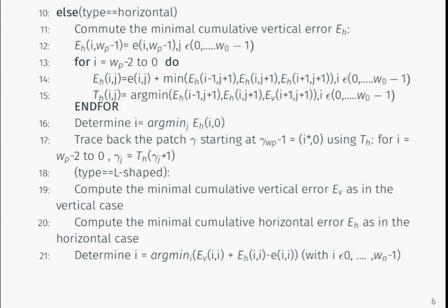To find the minimum error boundary cut, three cases can occur depending on the overlap shape: vertical overlap, horizontal overlap, and L-shaped overlap. Vertical and horizontal overlaps share the same method as mentioned earlier. L-shaped overlap is a combination of vertical and horizontal overlaps, so we combine case one and case two.